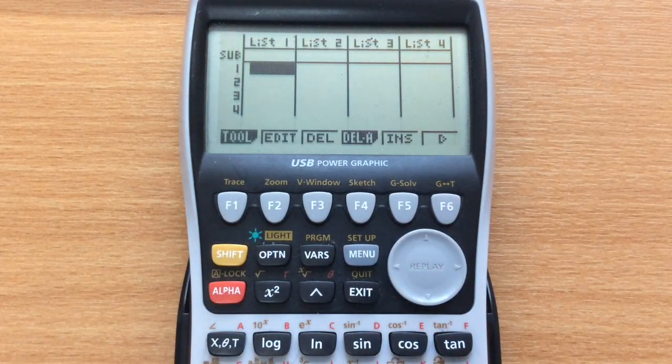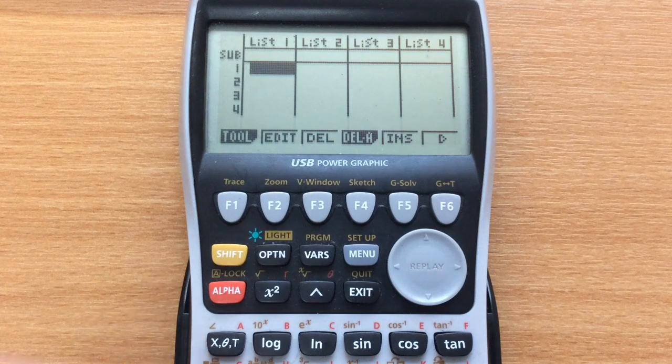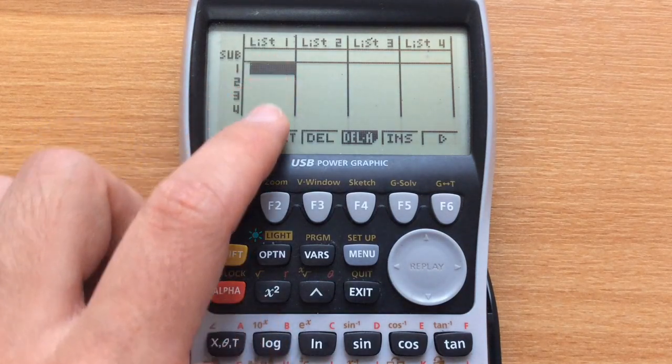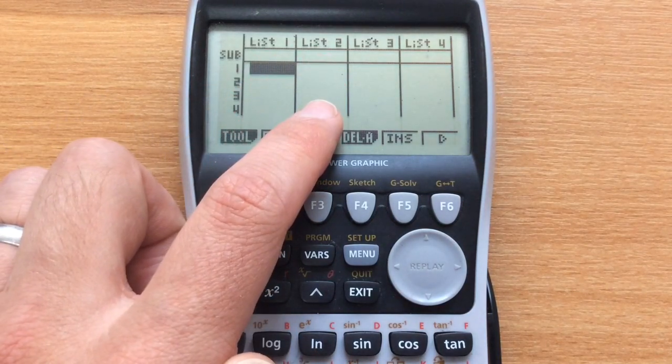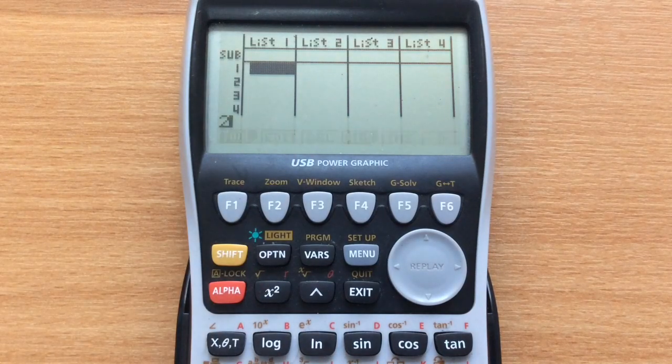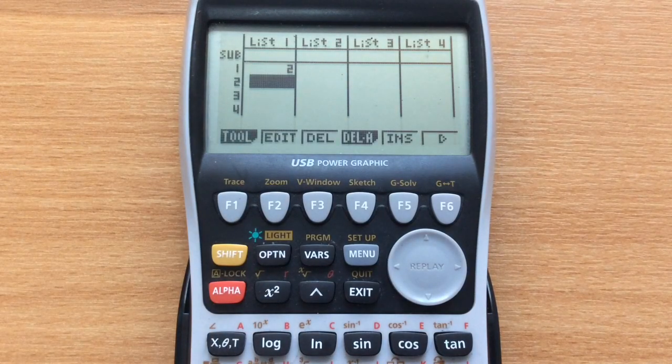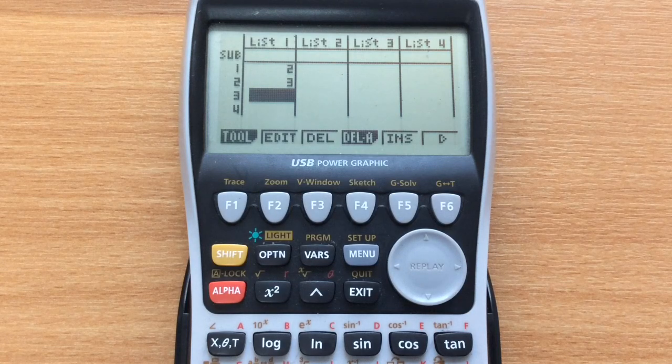We've now got our blank spreadsheet and we're going to put our data in. We're going to put all of our X values in list 1 and our Y values in list 2. Very simply, just type the value in, press ENTER, and keep going like that through all of them.